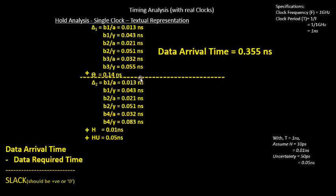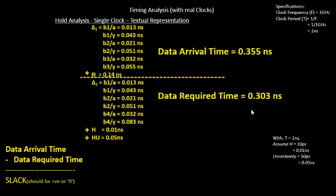For the data required time, using values such as 0.13, 0.4043, 0.021 ns, and the hold values from previous STA lectures, the data required time — which is δ2 + hold + hold uncertainty — comes to approximately 0.303 nanoseconds.